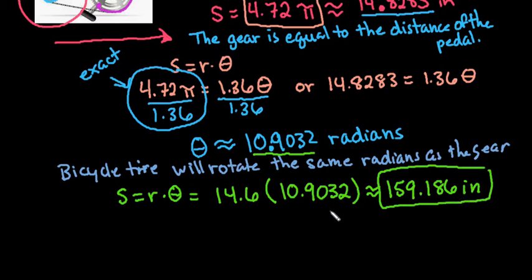Had I rounded this to 10.9, it would have given me a much less accurate answer. So again, if you're rounding, round to at least four decimal places. Our final answer is that when we turn the pedals 180 degrees, the bicycle moves forward by 159.186 inches.